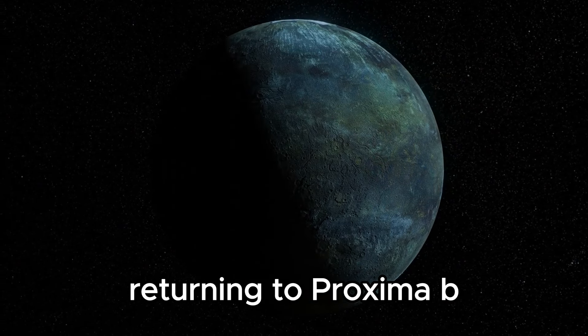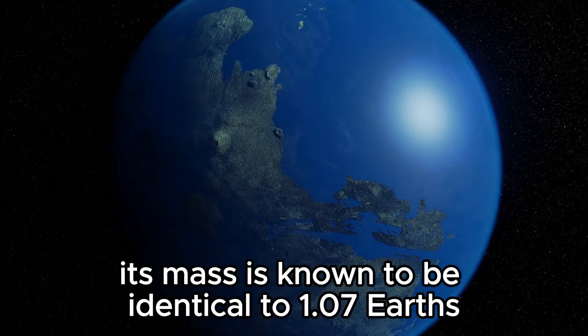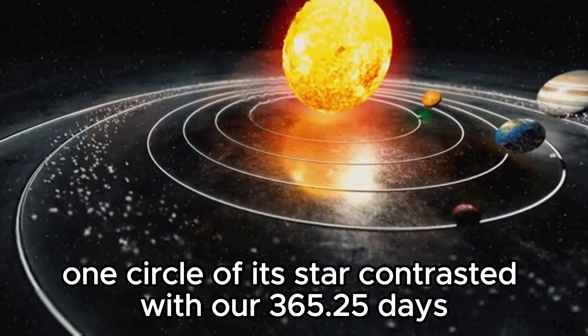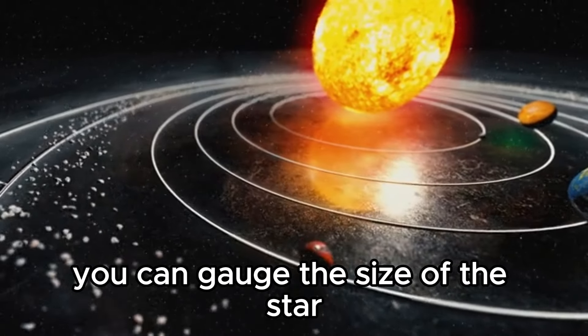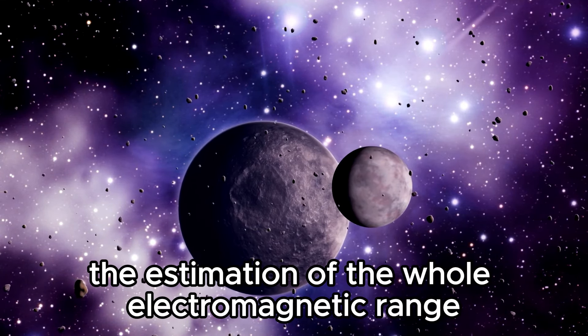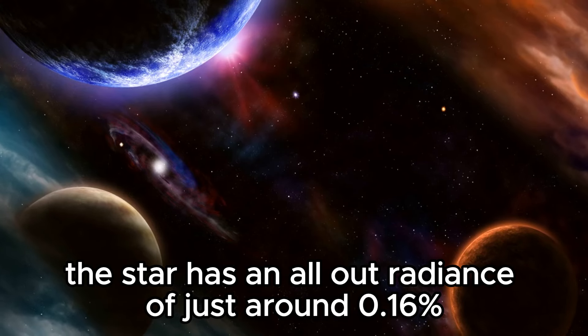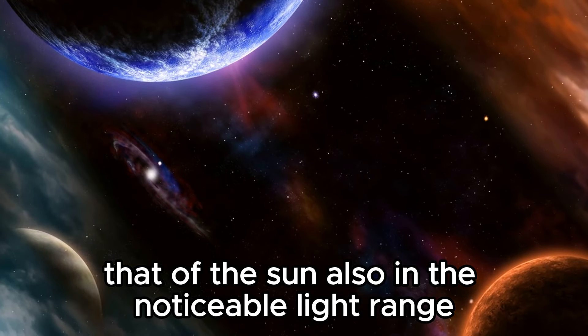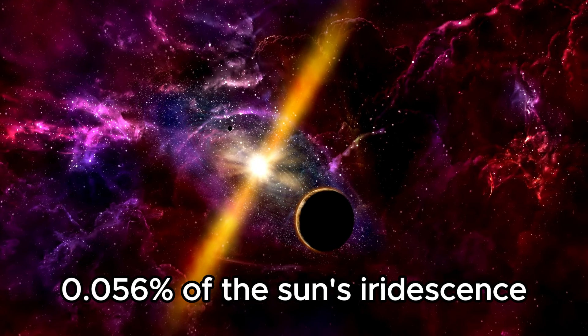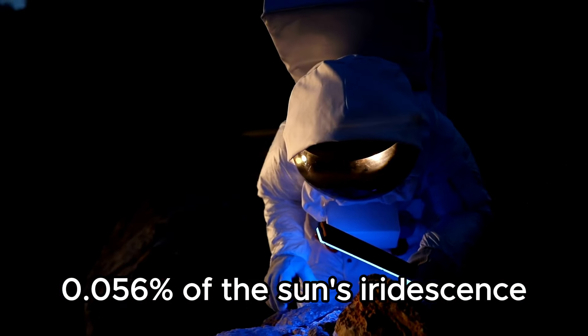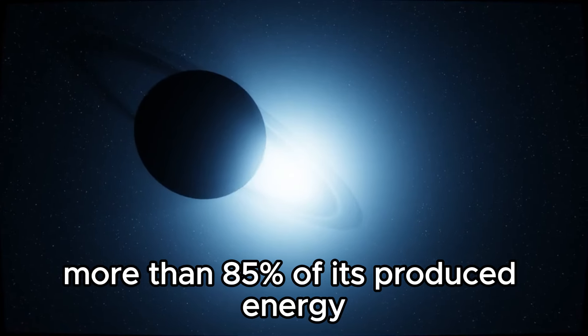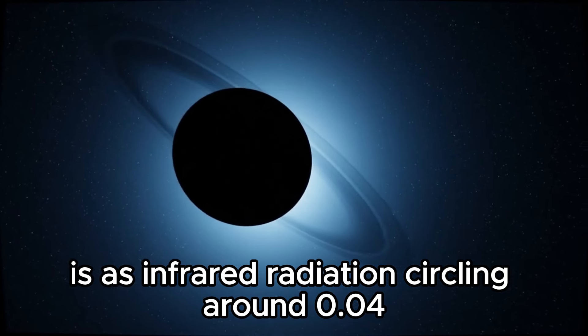Returning to Proxima B, its mass is known to be equivalent to 1.07 Earths. Interestingly, it only requires 11.2 days to complete one orbit of its star compared to our 365.25 days. Under the estimation of the whole electromagnetic spectrum, the star has a total luminosity of only around 0.16% that of the Sun. In the visible light spectrum, it appears even fainter, only illuminating 0.056% of the Sun's luminosity, emitting a fundamentally lesser amount of light energy. More than 85% of its generated energy is as infrared radiation.